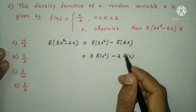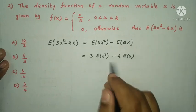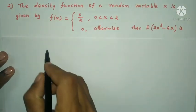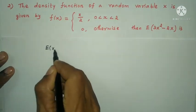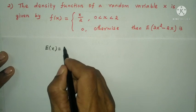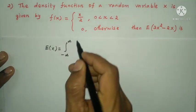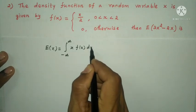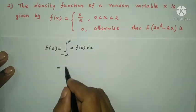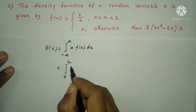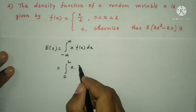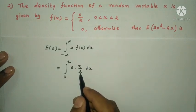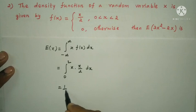We need to compute E(x) and E(x²) separately, then substitute. First, E(x): the expectation of X equals the integral from minus infinity to plus infinity of x·f(x) dx. With our limits 0 to 2, this is the integral from 0 to 2 of x·(x/2) dx. Taking 1/2 as constant outside.